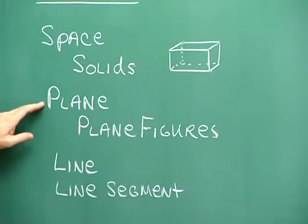A plane is just a flat surface. We might talk about the flat surface of the floor, this wall, or this chalkboard. Objects that are drawn on a plane are called plane figures. A plane figure might be a triangle — it would be a plane figure because it is wholly contained within the plane of this chalkboard.